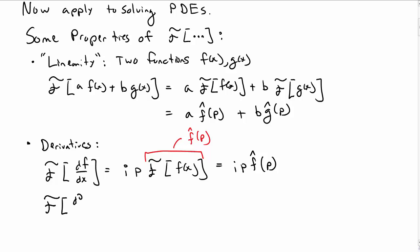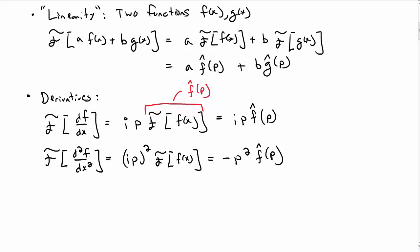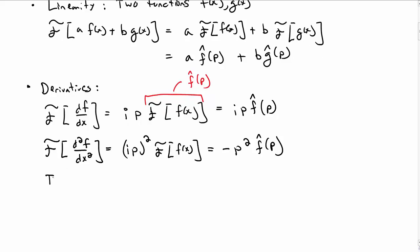The Fourier transform of the second derivative of f with respect to x is, well, you just do this two times, so you get ip twice, so ip squared times the Fourier transform of f of x, which again, that's just f hat. So when you square that, you get minus p squared f hat of p. Notice the i squared gives you just the minus sign.